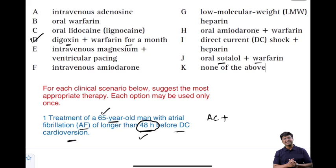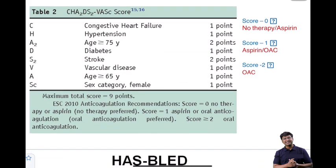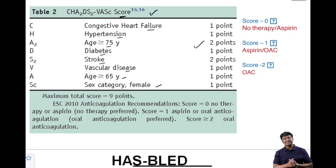Which patients with atrial fibrillation require anticoagulation is a very important question. For this, two important scores are used. The first is the CHA₂DS₂-VASc scoring system, which includes parameters: congestive heart failure, hypertension, age over 75 years, diabetes, stroke, vascular disease, age over 65 years, and female gender. If the score is zero, no therapy or aspirin can be given. If the score is one, give aspirin or oral anticoagulant.